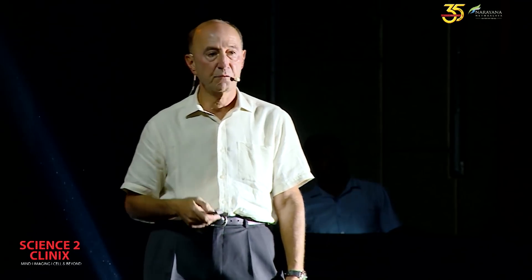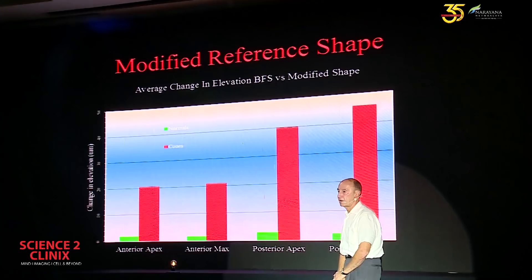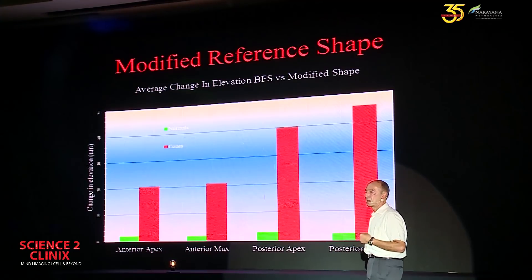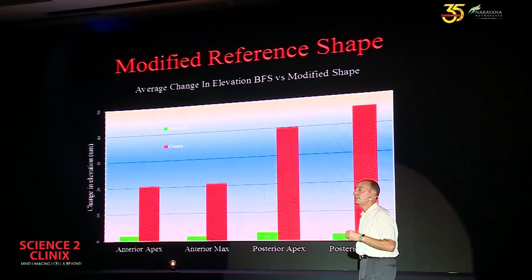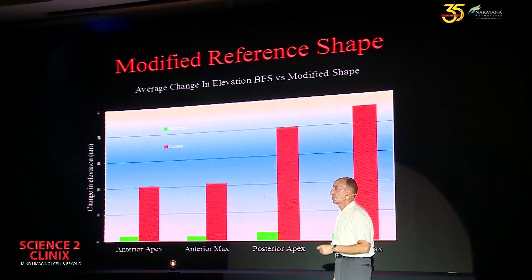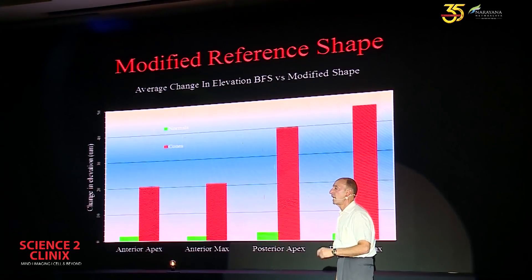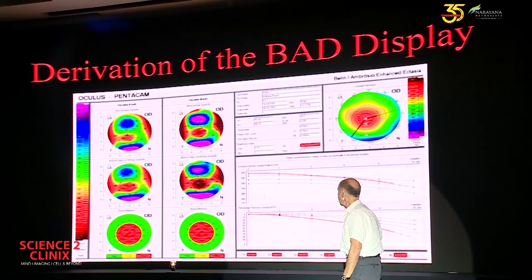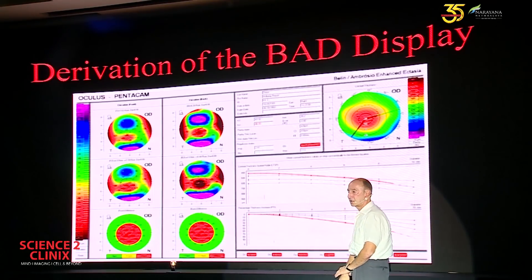On the anterior surface, cones underwent about a 20 micron change with the enhanced reference surface, versus less than two microns for normals. On the posterior surface, cones underwent a 40 micron change versus less than three microns for normals. That is the derivation of the left part of the Belin-Ambrosia display — the BAD display.